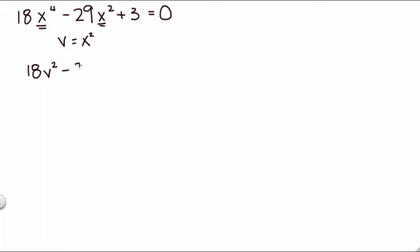And then 29v plus 3 equals 0. So let's see, 18 times 3 is 54. So we're looking at things that multiply to 54 but add up to negative 29.